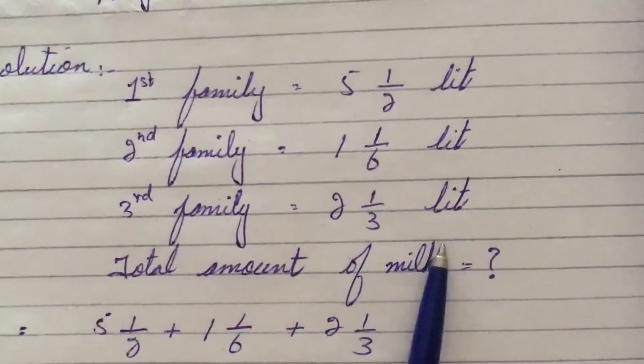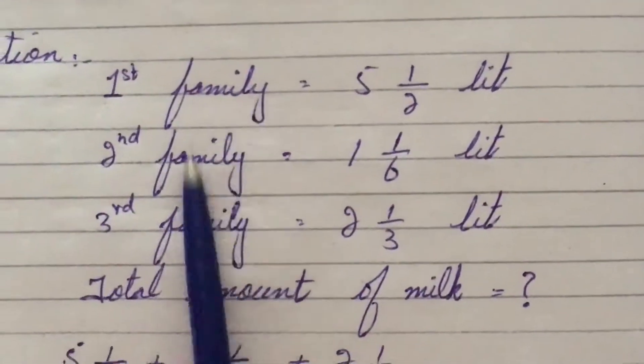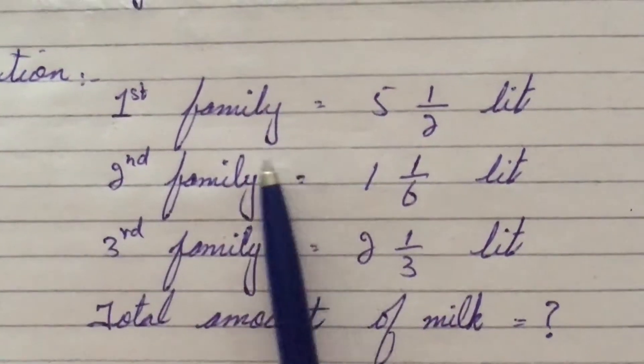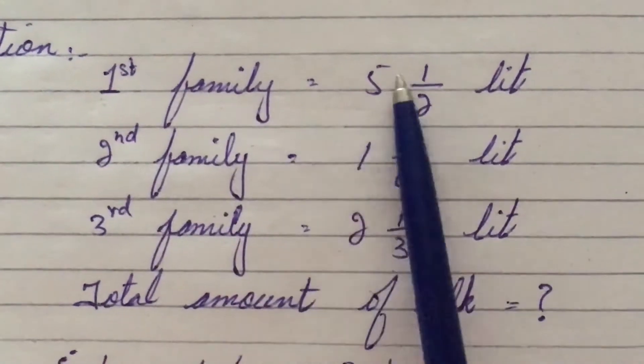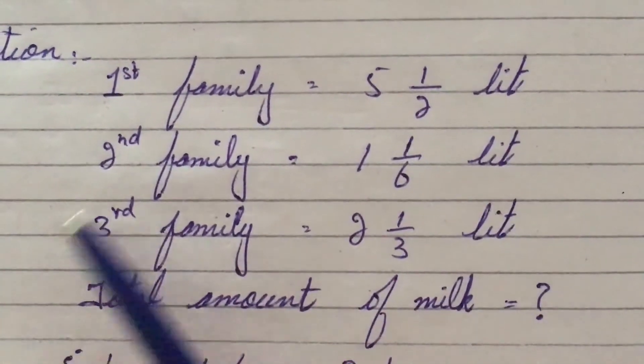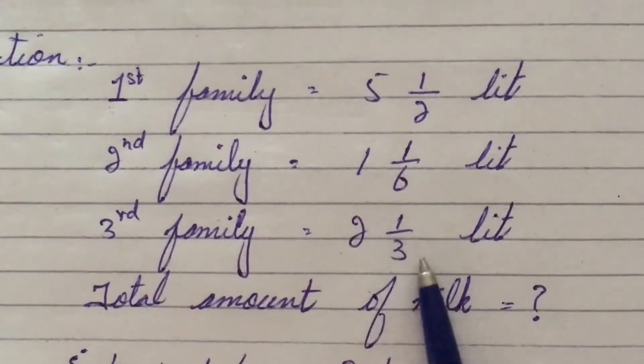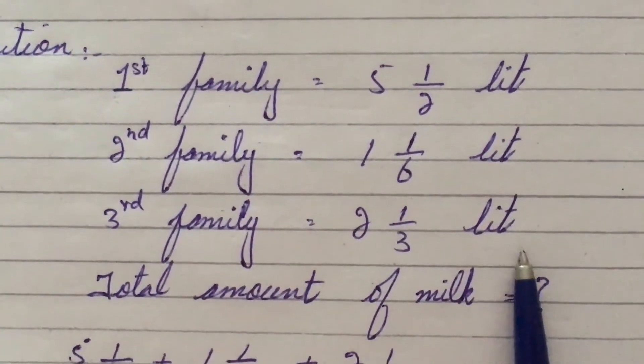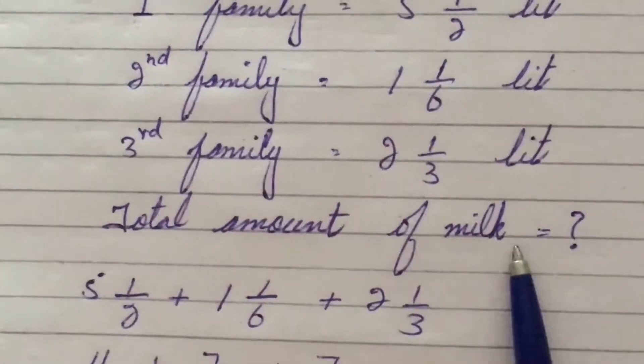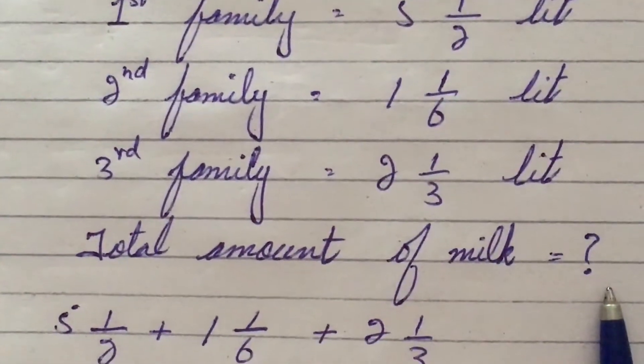This is a word problem so we have to mention it like: first family 5 1/2 liter, second family 1 1/6 liter, third family 2 1/3 liter. Now total amount of milk is equal to question mark, means we have to find out the total amount of the milk.